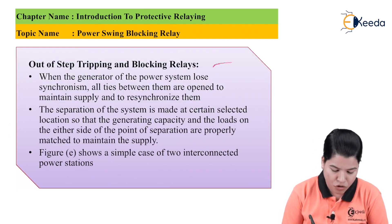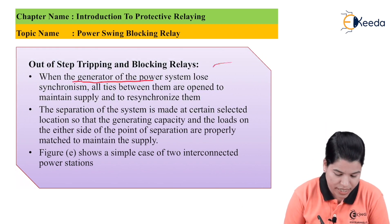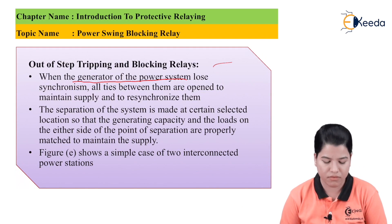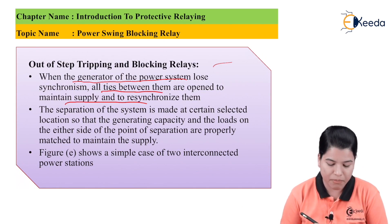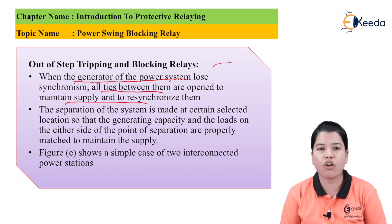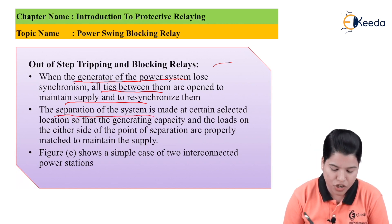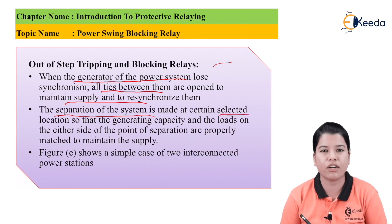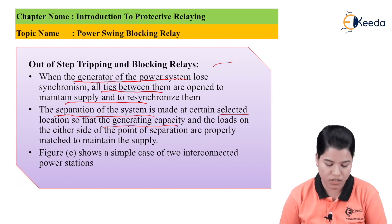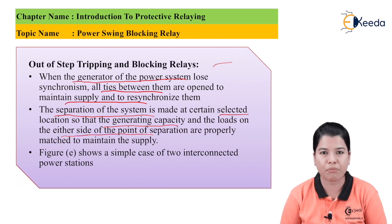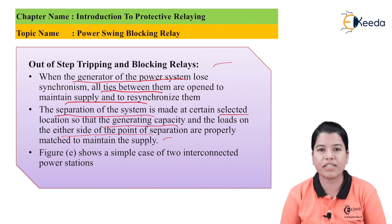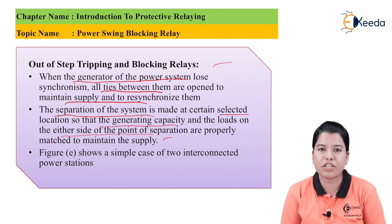Now let us study out-of-step tripping and blocking relays. When the generators of the power system lose synchronism, all the ties between them are opened to maintain supply and to resynchronize them. The separation of the system can be made at a certain selected location so that generator capacity and loads on either side of the point of separation are properly matched to maintain the supply without interrupting consumers.